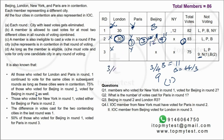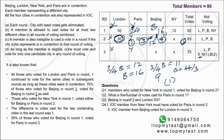Three-fourths of Beijing's round-one voters voted for Beijing in round two, and that equals 12. So Beijing's round-one vote total = 16. We can now fill in Paris round one: total votes in round one = 82, so Paris = 82 - 30 - 16 - 12 = 24 votes in round one.